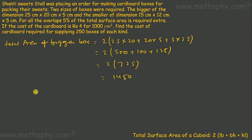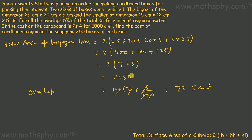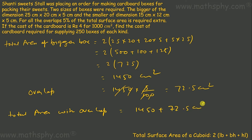Now let's calculate the overlap, which is 5% of 1450 cm², giving 72.5 cm². So the total area with overlap would be 1450 + 72.5 = 1522.5 cm². This is the area of cardboard required to make one bigger box with overlapping.